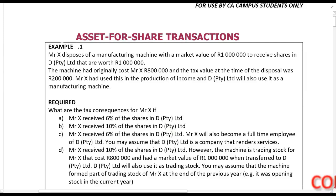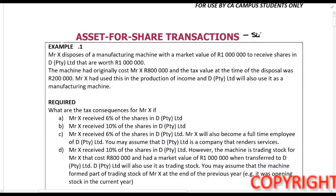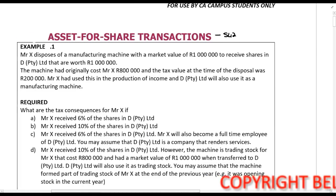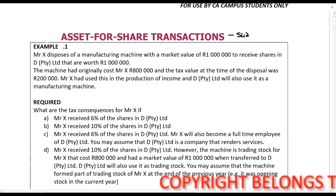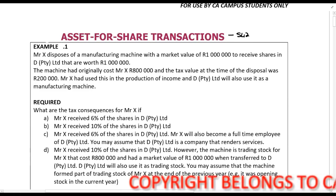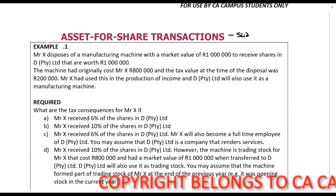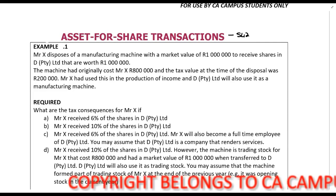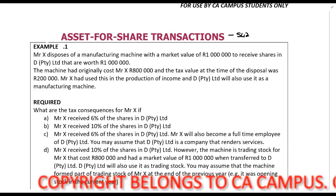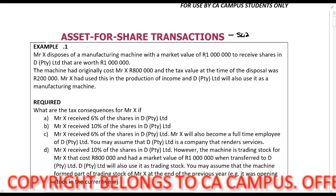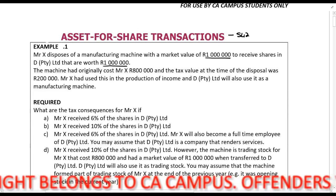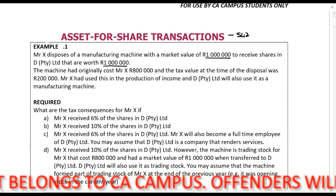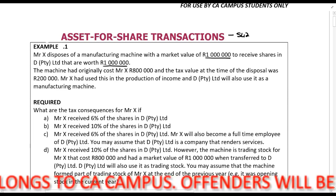In this example we look at the asset-for-share transactions per Section 42. Mr. X disposes of a manufacturing machine with a market value of one million rands to receive shares in DP to I Limited that are worth one million rands. The market value is a million and the shares are worth a million, so there is no Section 24BA application here.